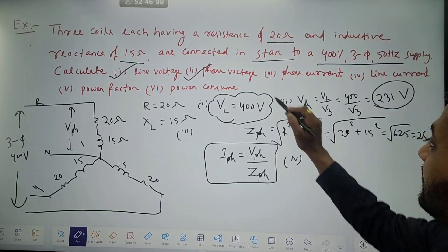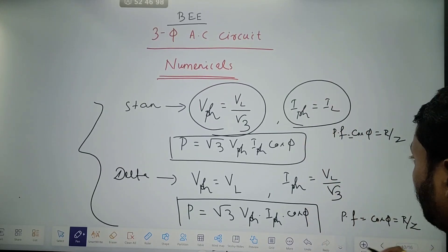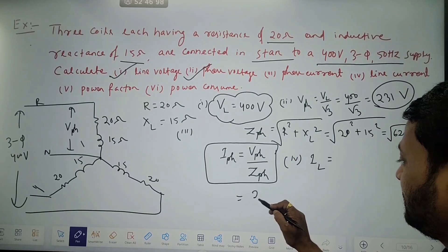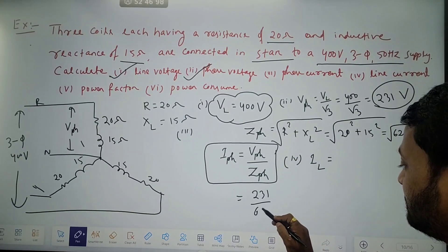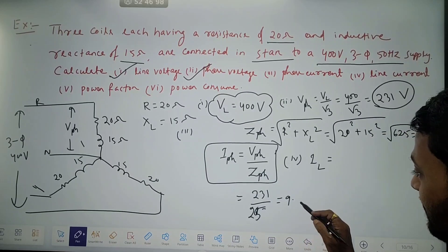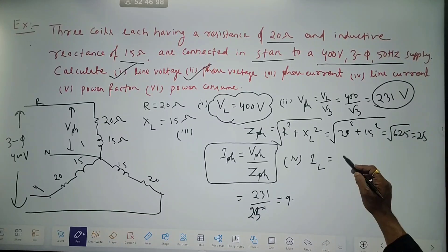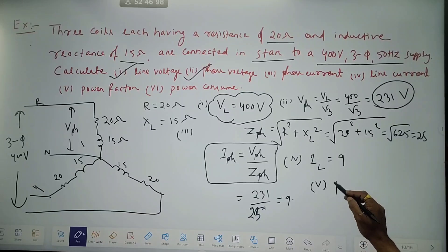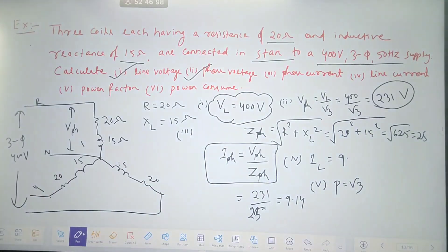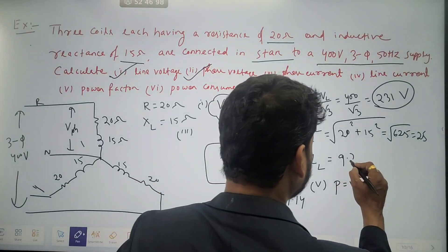As I have told, in a star connected circuit, phase current equals line current. Phase voltage is 231 and phase impedance is 25, so phase current is 231 by 25. It is coming 9.24 amperes. And so line current is also the same — 9.24 amperes.